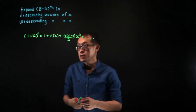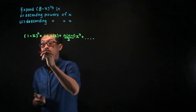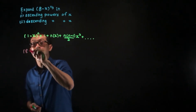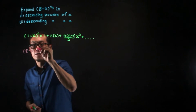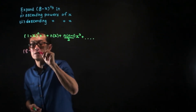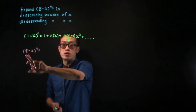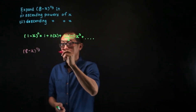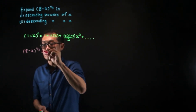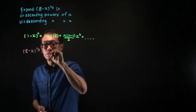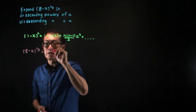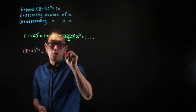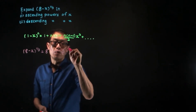The expansion given to us is of the form 8 minus X to the power of one-third. Now, the leading term is not 1 — it is 8. So what we do is a factorization: we take 8 out, giving 8 to the power of one-third times (1 minus X over 8) to the power of one-third. And 8 to the power of one-third equals 2.